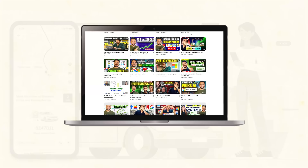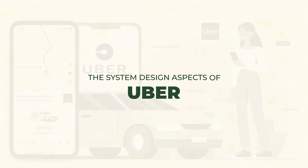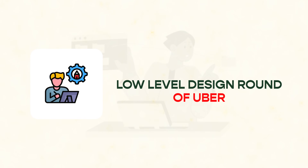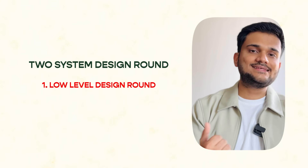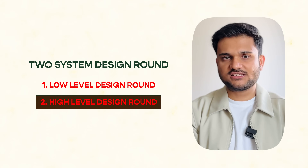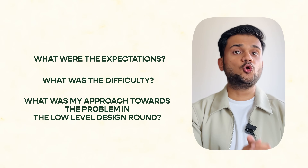Recently I posted a video on my channel where I talked about my interview experience with Uber. I interviewed with Uber for an IC5 role and the result was that I was downgraded and offered a role for IC4, which is kind of like an L4 SD2 role. A lot of comments were asking for a deeper dive into the system design aspects of Uber. In this video, I'm going to talk specifically about the low level design round of Uber, covering expectations, difficulty, and my approach.